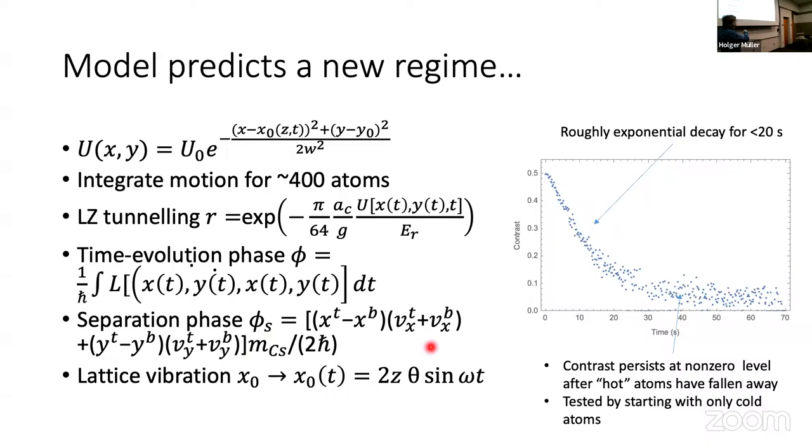And then we turn on lattice vibration, and here's a typical result for the contrast as function of time. We see a roughly exponential decay for the first 20 seconds that agrees well with the experiment. But we also see that the contrast levels off at about 5% and stays there. So this is not noise from the simulation. This is a real prediction. If this model is right, there should be some residual contrast at very long times that we were unable to see in the experiment at that time. But now, of course, we wanted to know, is this real? So one observation is that after 20 seconds, the fastest moving atoms have taken themselves out of the lattice. They've just fallen away.